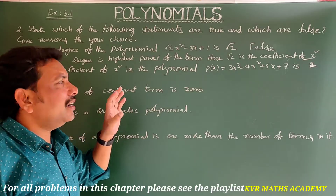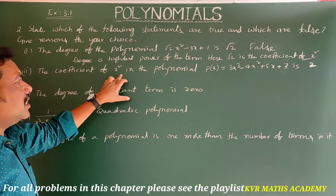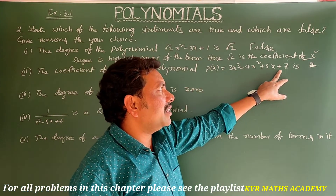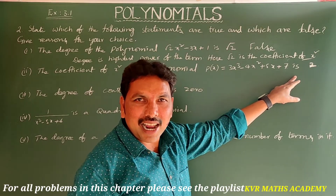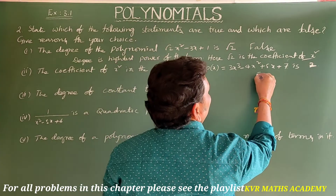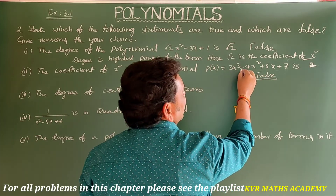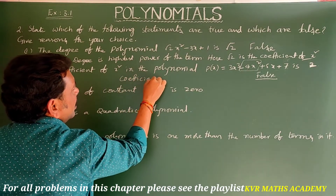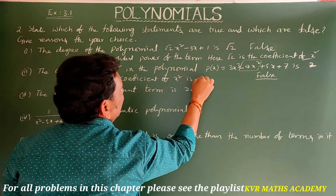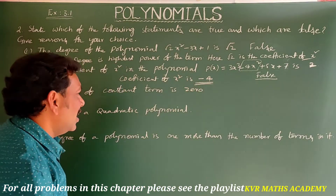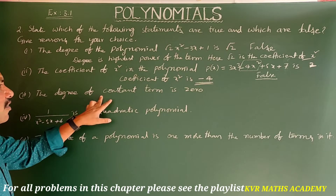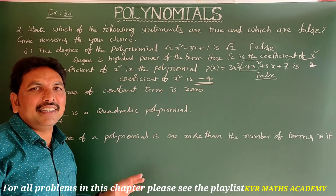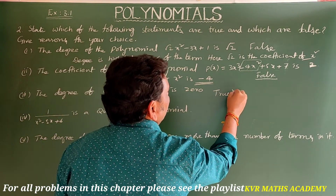Second statement: the coefficient of x² in p(x) = 3x³ - 4x² + 5x + 7 is 2. This is false, because the coefficient of x² is minus 4. Third statement: the degree of a constant term is 0. This is true — whatever constant you take, its degree is always 0.